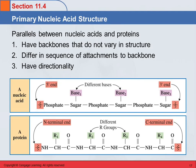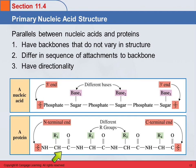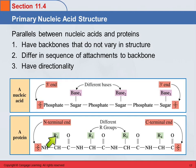So we have a parallel here between the nucleic acids and the proteins. For the nucleic acids, we have this backbone: sugar, phosphate, sugar, phosphate, sugar. And in the proteins, we had nitrogen, carbon, carbon, nitrogen — this regular repeating chain. The differences between different proteins are the side chains.